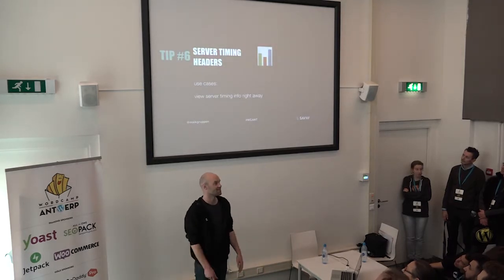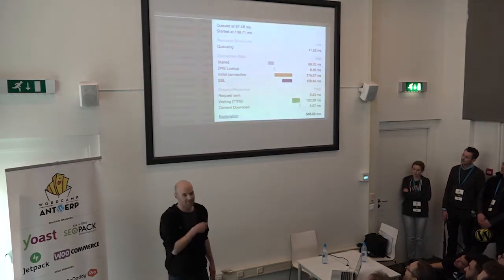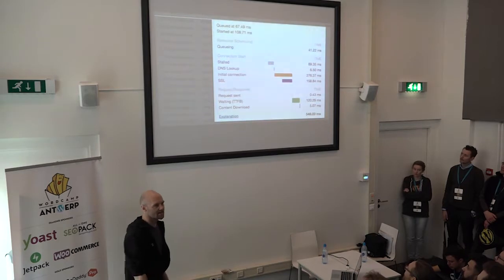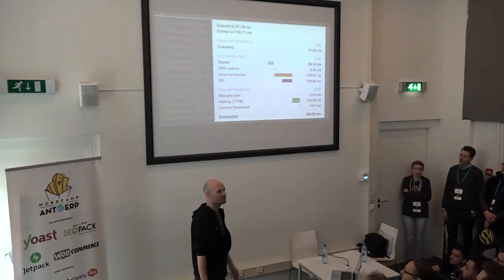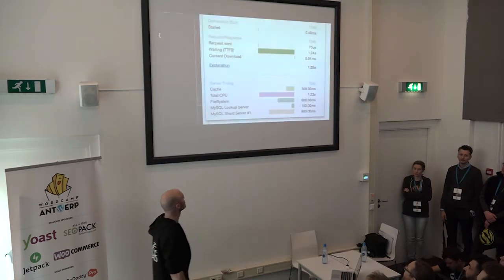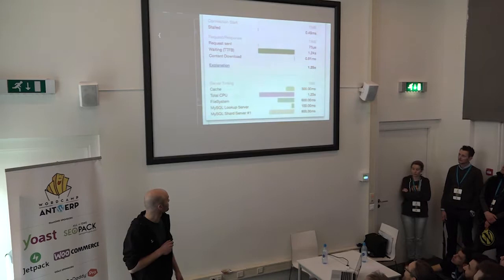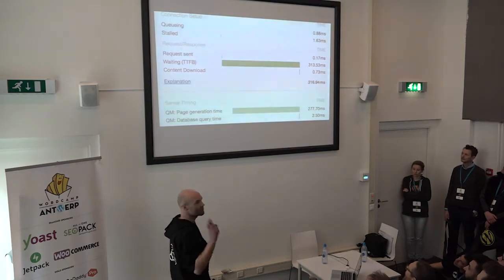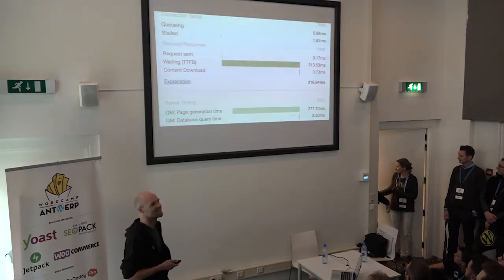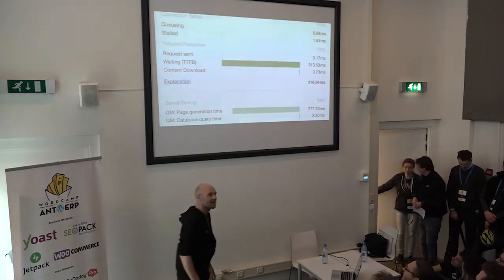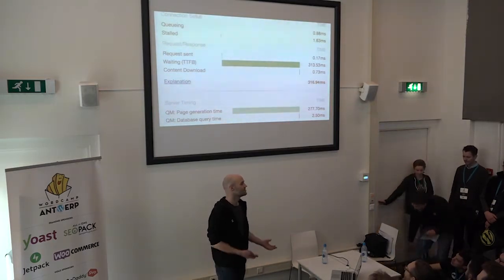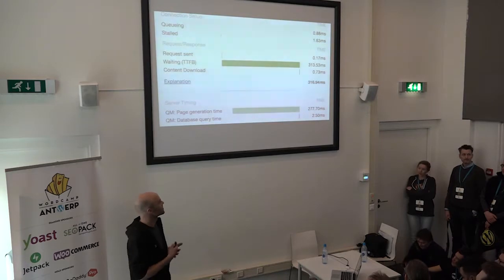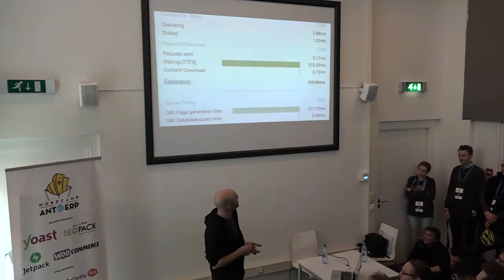Server timing headers: we saw earlier the Google Fonts API waterfall — all that information. The waiting time to first byte is just the server responding. With server timing headers you can see how long the cache took and how long total CPU time was. It's not easy to implement, but for WordPress there's a plugin of course — Query Monitor is already forking their plugin to include these functionalities so you can read out the information Query Monitor has gathered from WordPress itself.